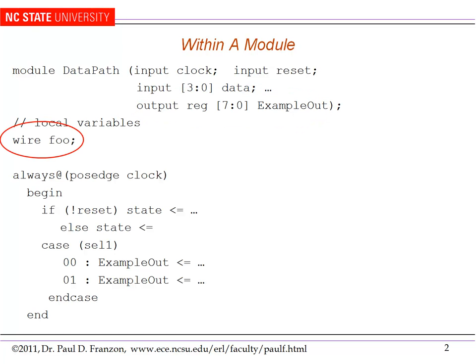Next, we have our local variables. Here I'll give the example of foo declared as type wire. Foo is assigned on the next page. And what type of assignment leads to type wire? Continuous assignment.